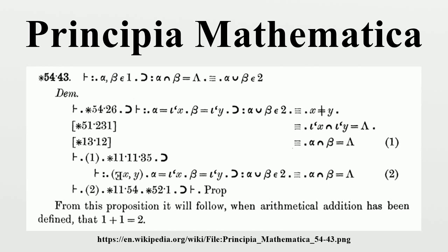Primitive propositions. The first edition begins with a definition of the sign: 1.01, p implies q equals tilde p V q, definition. 1.1, Anything implied by a true elementary proposition is true. Primitive proposition, modus ponens.